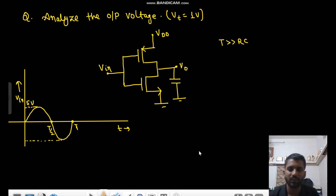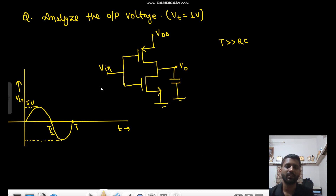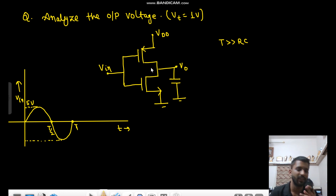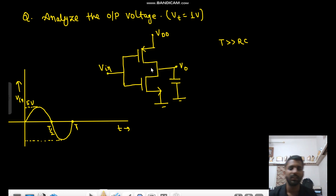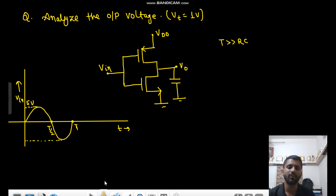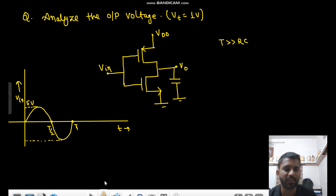Hello everyone. So this is the question: we have to analyze the output voltage. The configuration given is a CMOS inverter, with the condition that T is very much greater than RC. The input given is Vin going from 0 to 5 volts as a sinusoid — basically 5 sin(ωt).